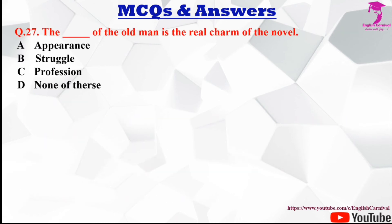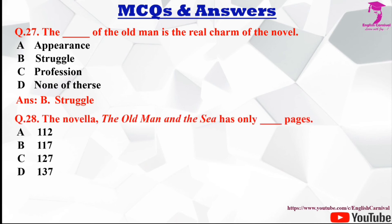Question number twenty-seven: The dash of the old man is the real charm of the novel. Options are A appearance, B struggle, C profession, and D none of these. The correct answer is B, the struggle of the old man is the real charm of the novel.